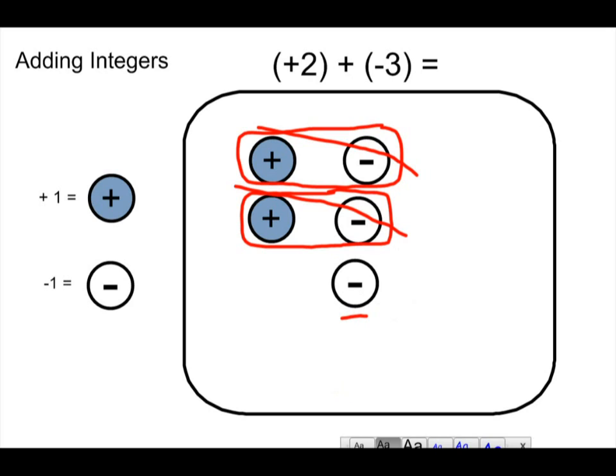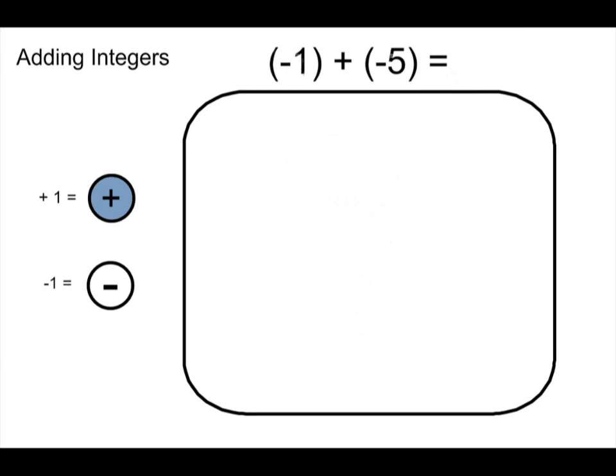My answer here is positive two plus negative three equals negative one. And you can see that model with the counters. One more example.